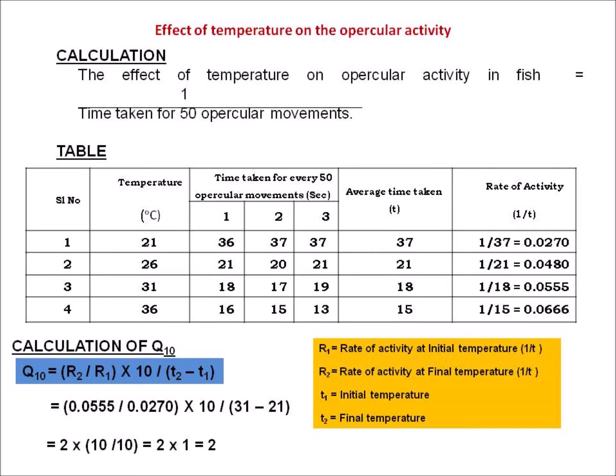Here in this table, the effect of temperature on opercular activity in fish can be calculated using the formula: 1 divided by the time taken for 50 opercular movements. Values are recorded as: temperature in degree Celsius, time taken for 50 opercular movements in seconds across three trials, the average time taken T, and the rate of activity which is 1 divided by T.